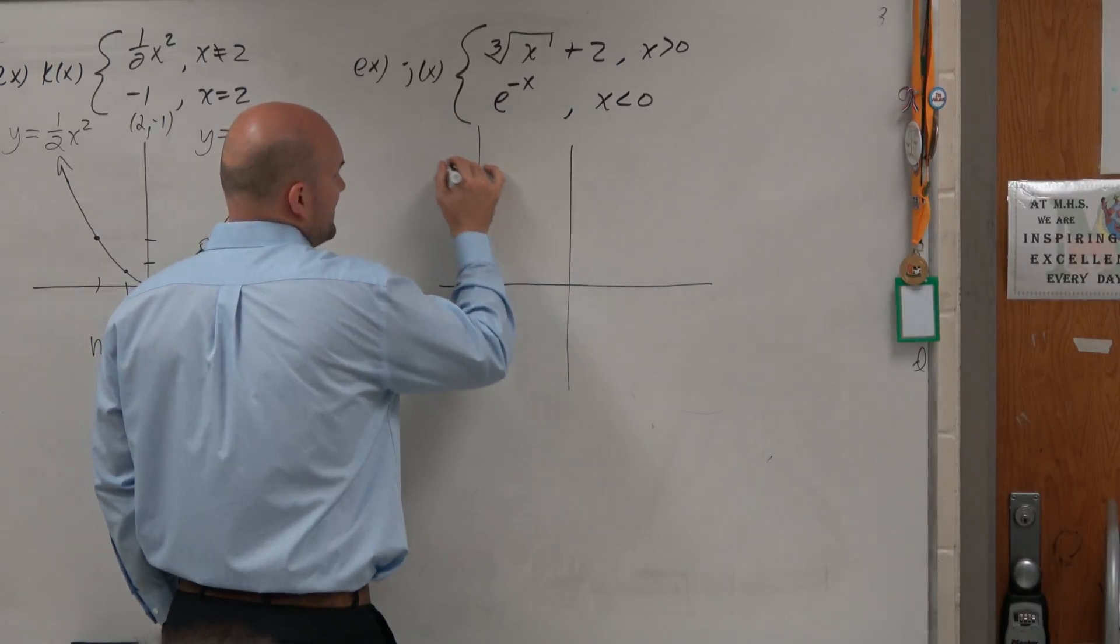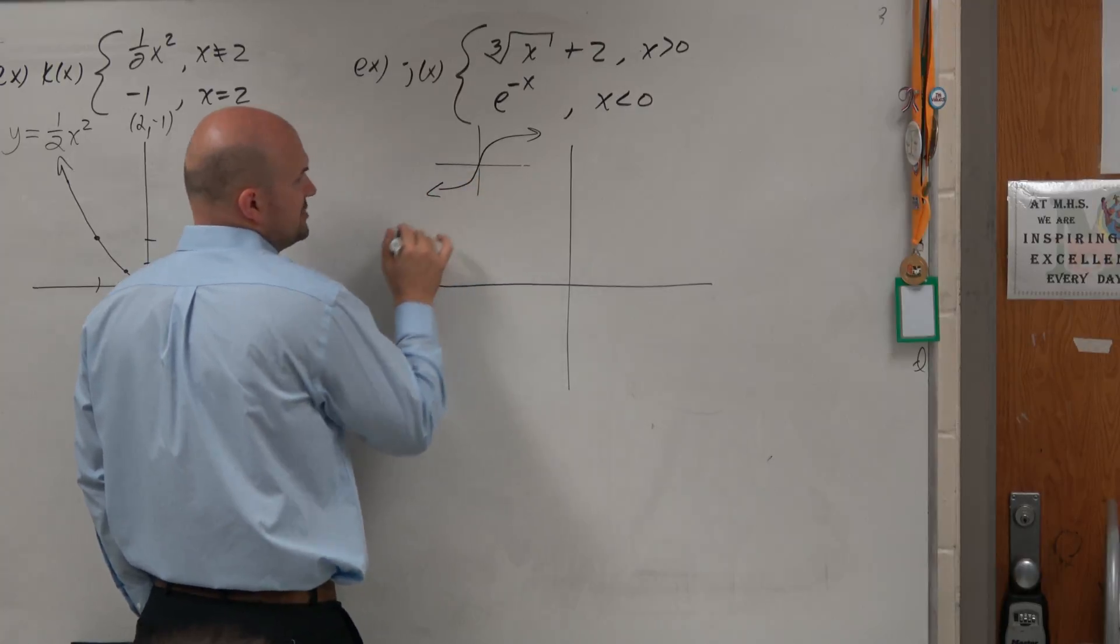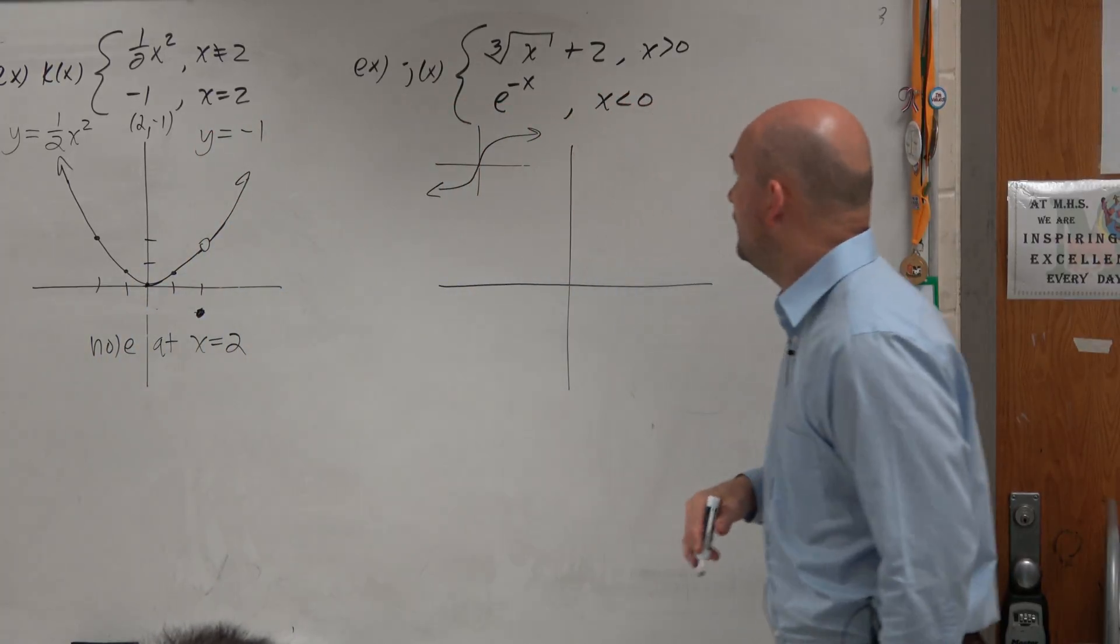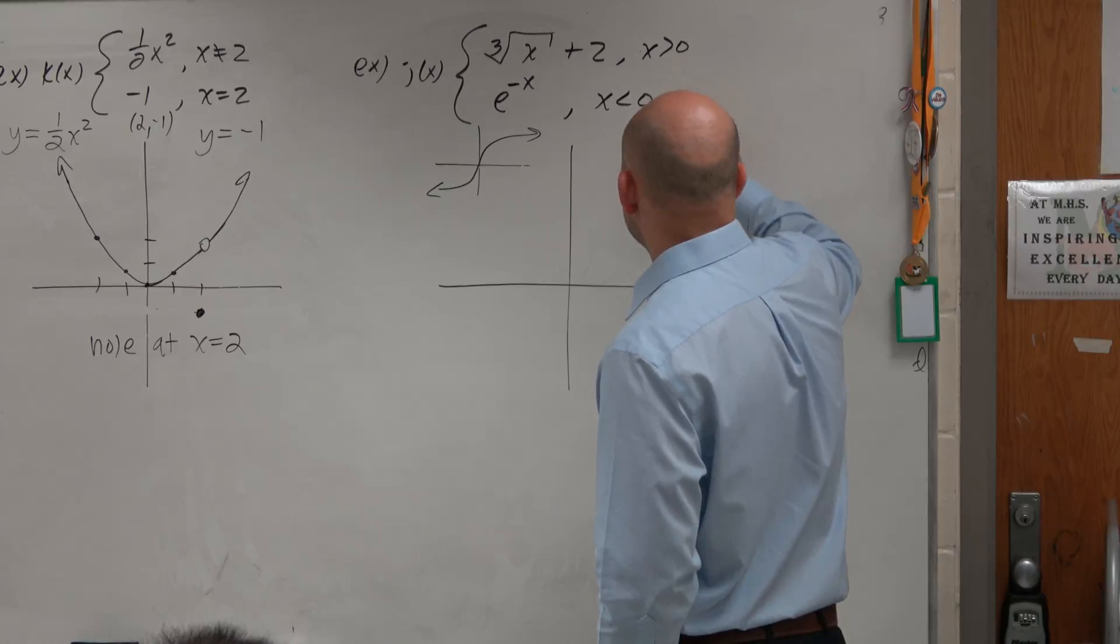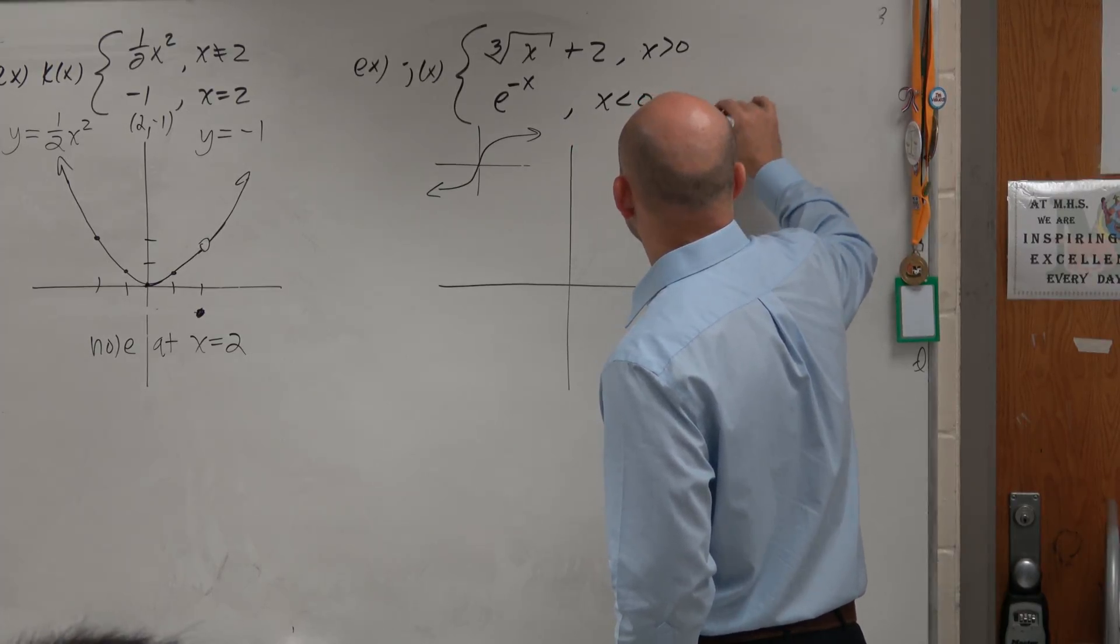So let's go ahead and write out the cube root of x. Since I did tell you to make sure you knew what these graphs look like, you guys could probably say, oh yeah, I kind of remember looking at that. And then we have e to the x, which has an intercept there, which looks like that.